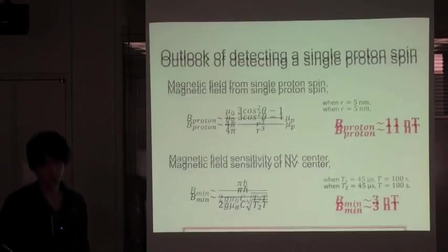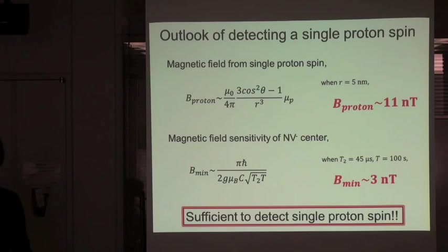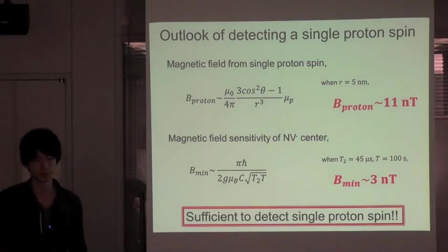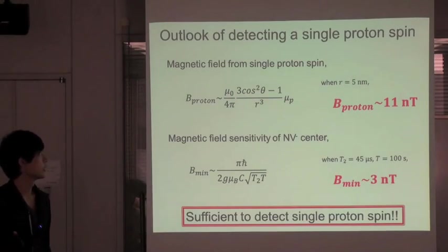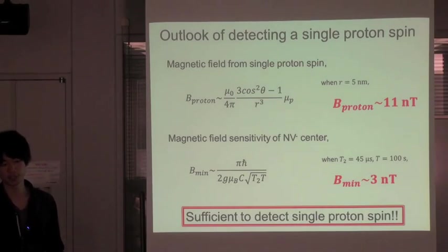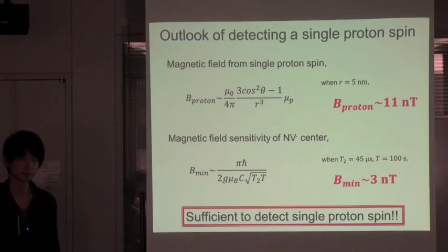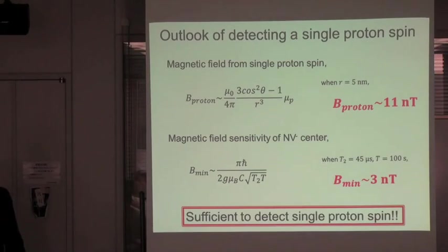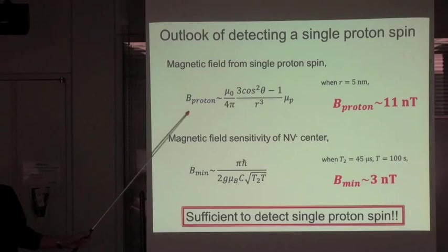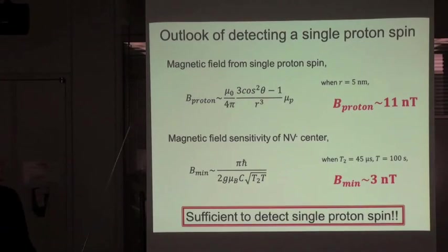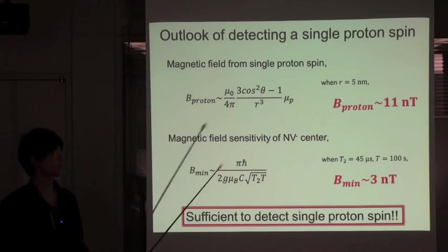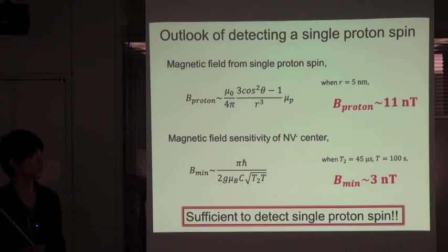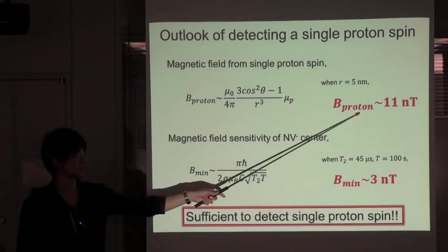In the future, we want to detect single proton spins, not ensemble proton spins. So, I will show you the theoretical outlook of detecting a single proton spin. The magnetic field from the single proton spin is given by this formula. The magnetic field at the distance 5nm away from the proton spin is 11 nT.